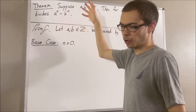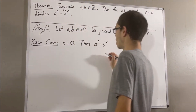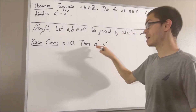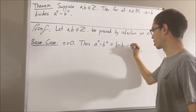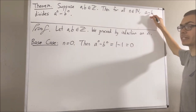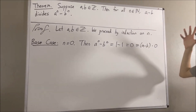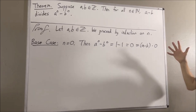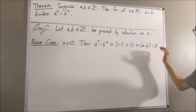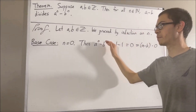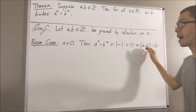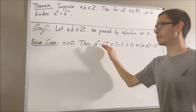Let me write out A to the power of zero minus B to the power of zero. We know that any number to the power of zero is just one. So A to the power of zero is one, and B to the power of zero is one. One minus one is zero, and zero is equal to A minus B times zero. So this tells us that there exists an integer such that A minus B times that integer is equal to A to the power of zero minus B to the power of zero. And that's precisely what it means for A minus B to divide A to the power of zero minus B to the power of zero.